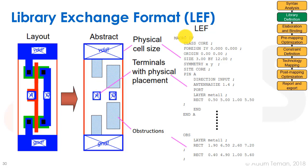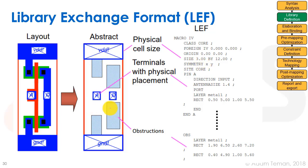Inside the LEF we have the header. Each cell name is called a macro. This cell is called IV for inverter, and it has different things in the header. For example, the physical cell size is three microns by 12 microns. It has something called symmetry, meaning we can flip it to X — left and right — and flip it to Y — up and down — but we can't rotate 90 degrees. It also has something called site core, which we'll discuss in a minute.